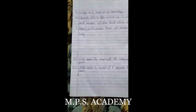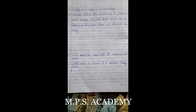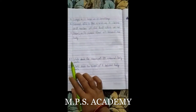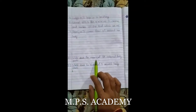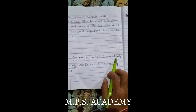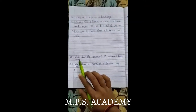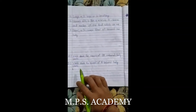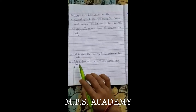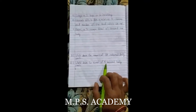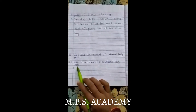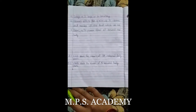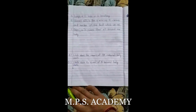Now here are two questions for you to do at home. Question number one: Write down the names of ten external body parts. Question number two: Write down the names of five internal body parts.